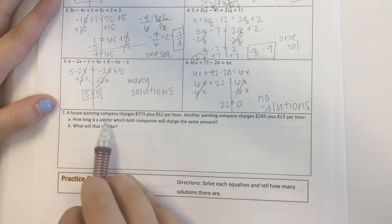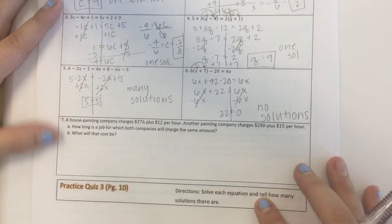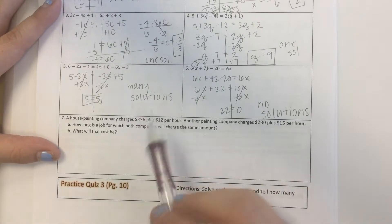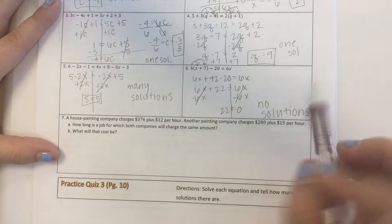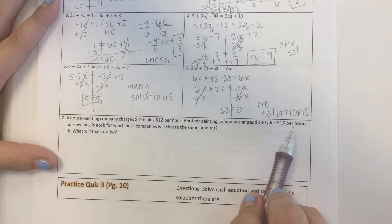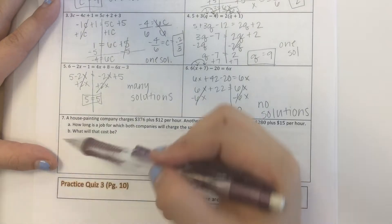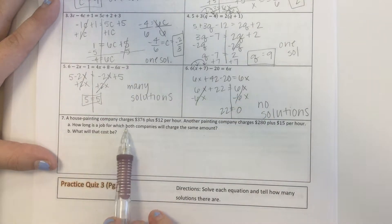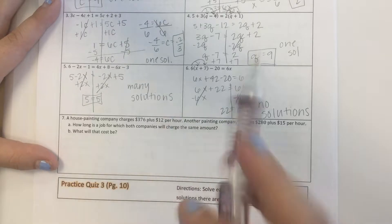Alright, a house painting company charges $376 plus $12 an hour. Another painting company charges $280 plus $15 per hour. So there's two questions here. How long is a job for which both companies will charge the same amount?